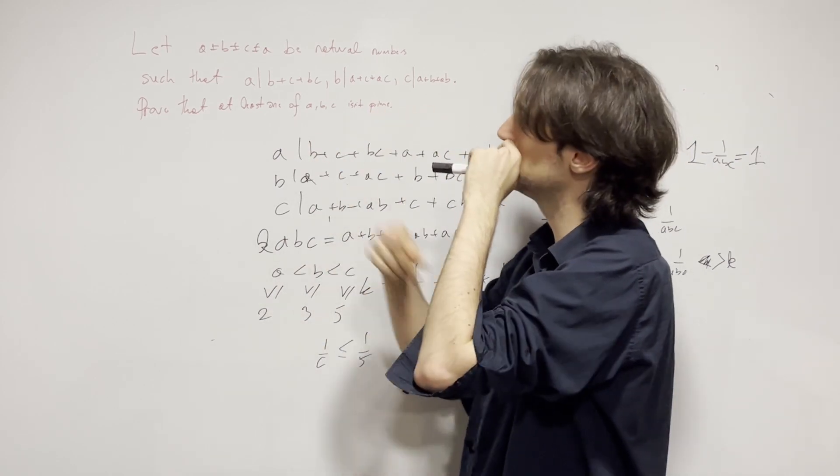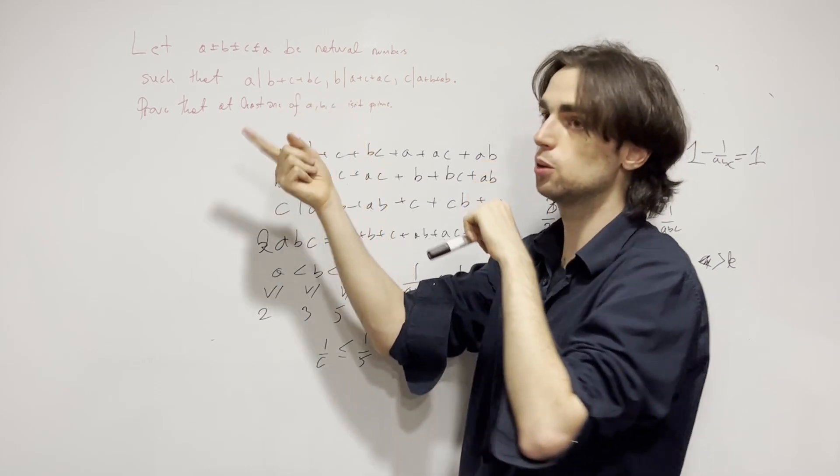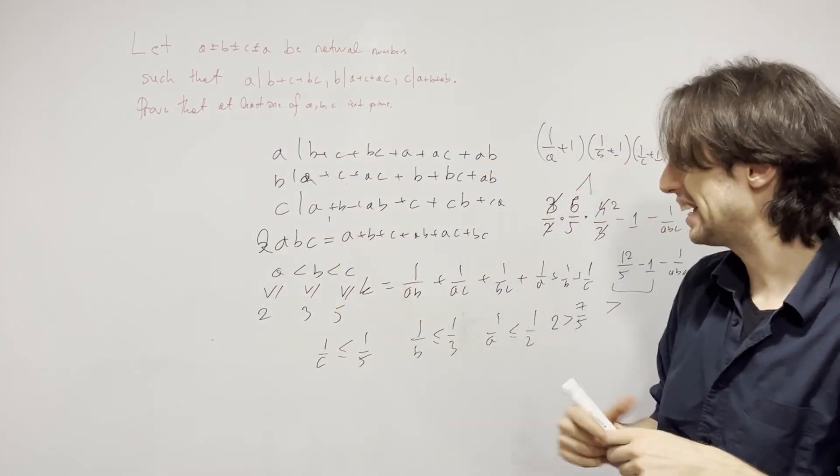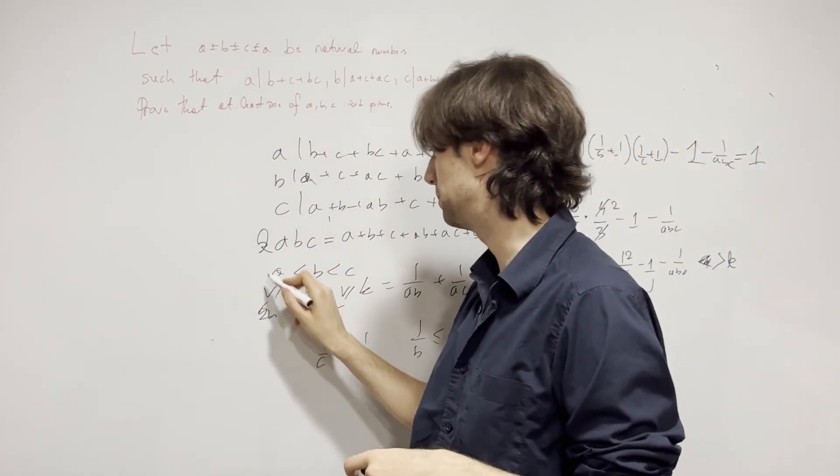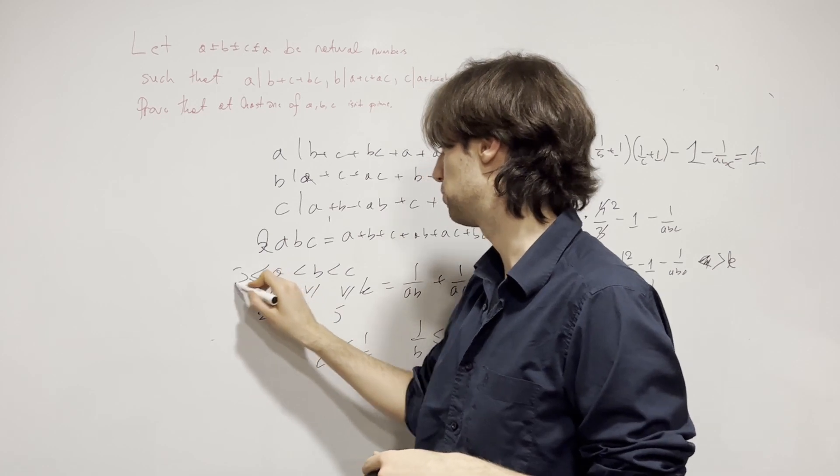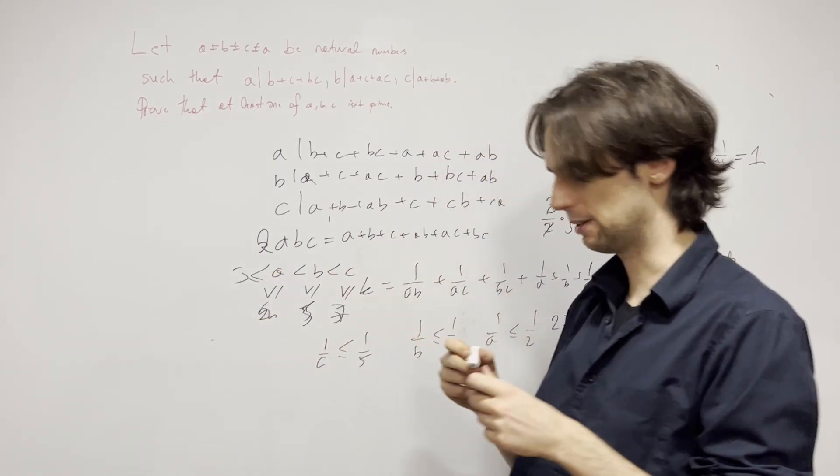If one of them is 2, the other 2 are odd, then this is going to be odd plus odd plus odd, which is odd. So actually A can't be 2. We can actually have a better estimate. If A is greater than or equal to 3, then B is greater than or equal to 5, C greater than or equal to 7.